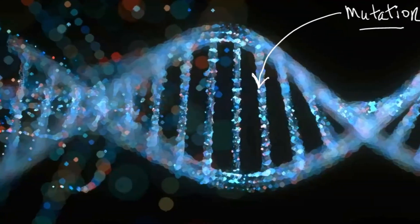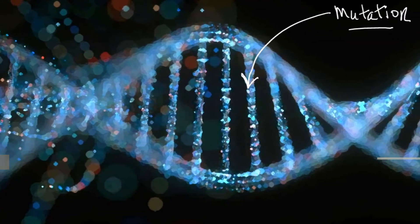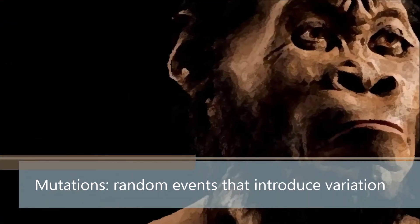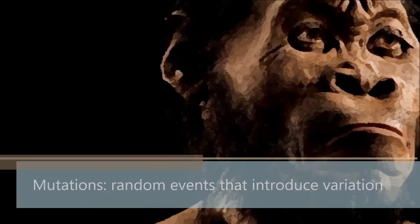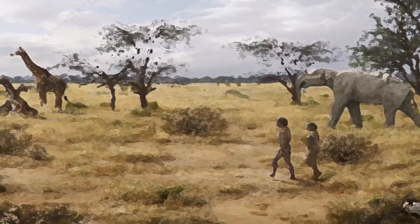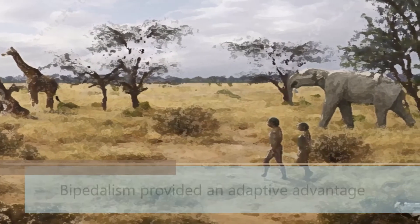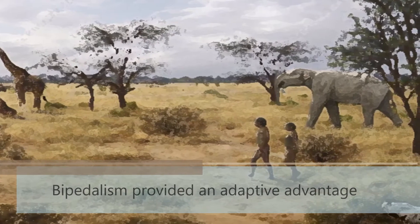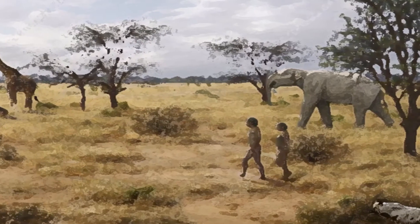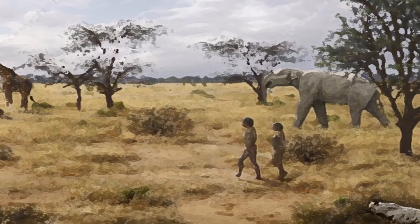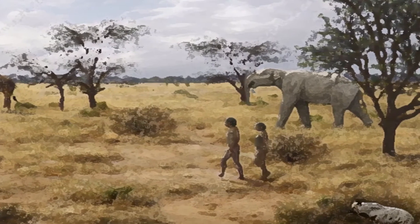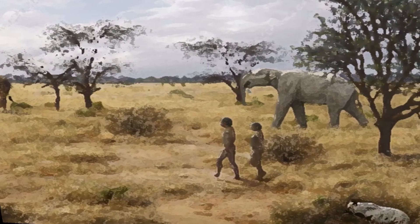Somewhere around 8 million years ago, there was a mutation that allowed new behavioral patterns to emerge. Our hominin ancestors benefited from this mutation. They walked differently than other great apes — they balanced on two legs and didn't rely on their forelimbs to walk. The mutation changed the relationship between the hominin body, solar radiation, and resource distribution.